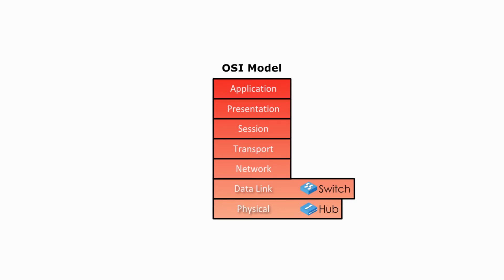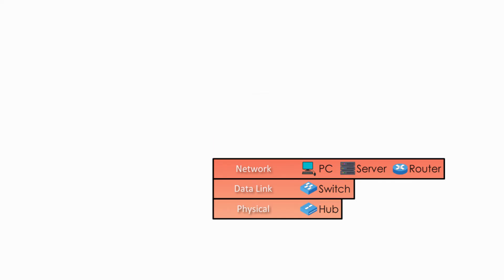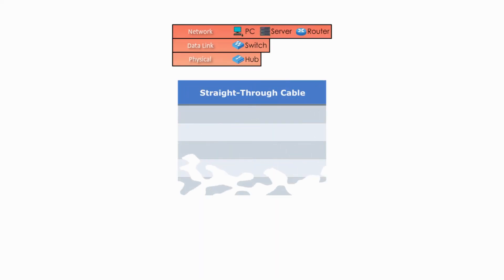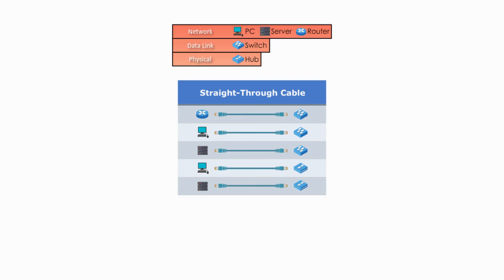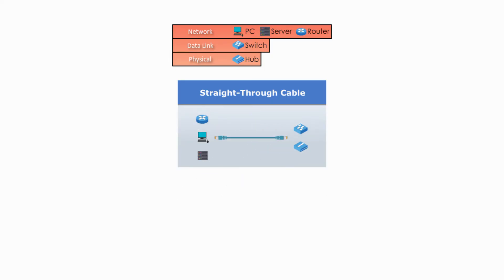A switch is a layer 2 device. Layer 3 networking devices are more intelligent, and they can include computers we use, servers, and routers.